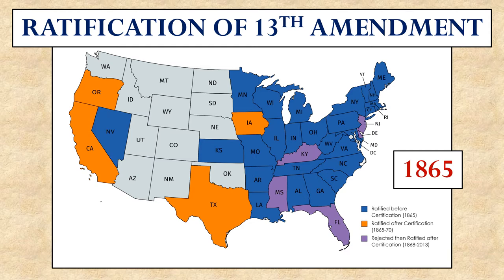The ratification of the 13th Amendment was achieved in a fairly short period of time. You can see on this map the states willing to do so immediately before its ratification in 1865, colored in blue. Others ratified it shortly after. A few reluctant states didn't ratify it for many years, like New Jersey and Florida, but it didn't matter because enough other states had already ratified it. There wasn't a lot of controversy about this — even Southerners accepted that slavery was over as a consequence of the war.